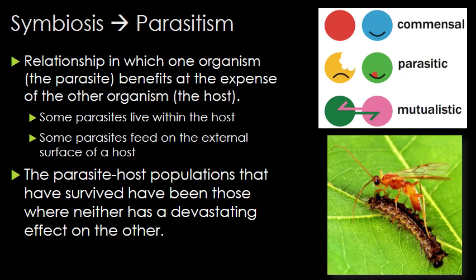Parasitism is a symbiotic relationship in which one organism, the parasite, benefits at the expense of the other organism, the host. Some parasites live within the host, such as tapeworms or heartworms. Some parasites feed on the external surface of a host, such as fleas, aphids, or mistletoe. The parasite-host populations that have survived have been those where neither has a devastating effect on the other. Parasitism that results in the rapid death of the host is devastating to both. It's very important that the host survives long enough for the parasite to reproduce and spread.